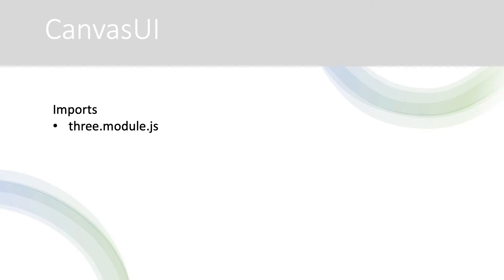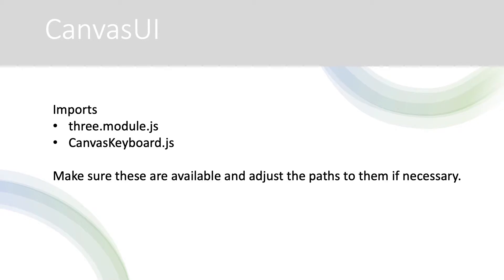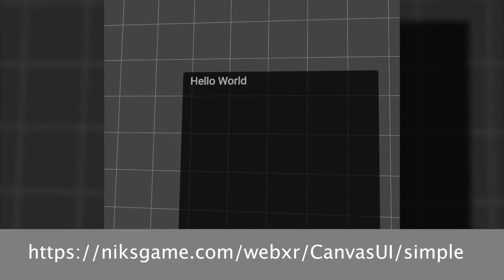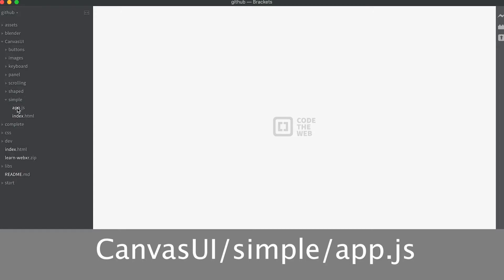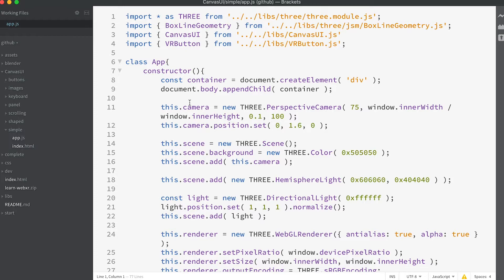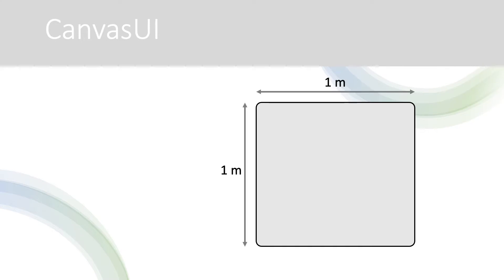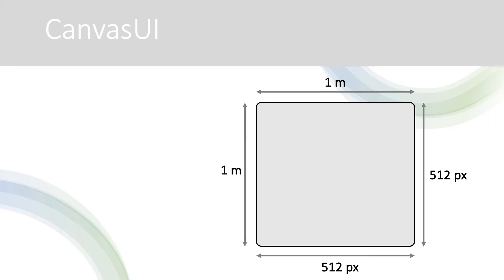The first thing to be aware of is Canvas UI uses two imports: 3ModuleJS and CanvasKeyboardJS, so when you're using it make sure these are available and adjust the paths if necessary. The first example we'll look at is a simple hello world one. A live version is at this address in the folder Canvas UI simple. Slide down to find the create UI method. A Canvas UI mesh is simply a plane that is one by one units. In a VR world this means it's one meter square. It has a canvas texture applied; by default this is 512 pixels square.